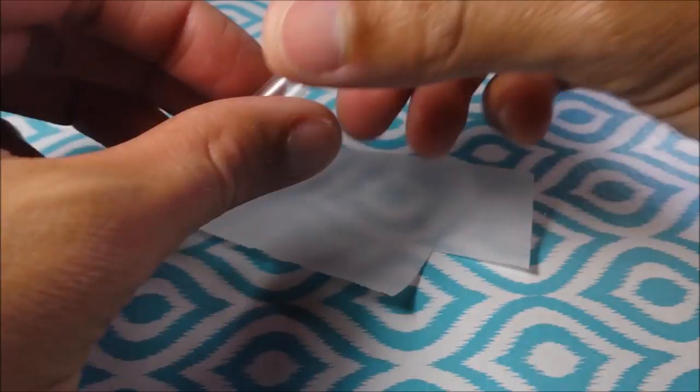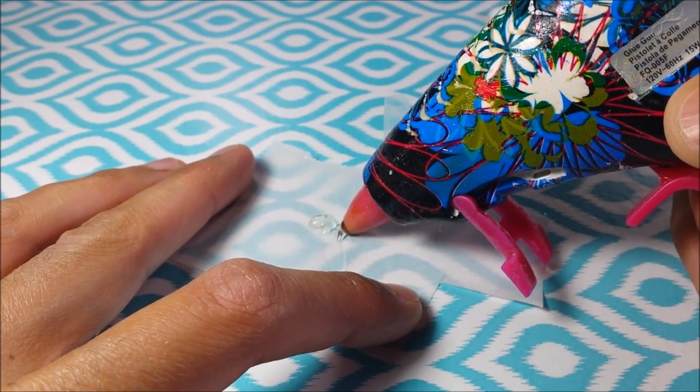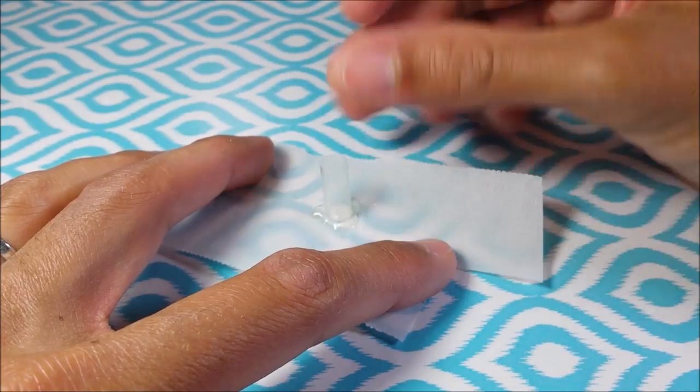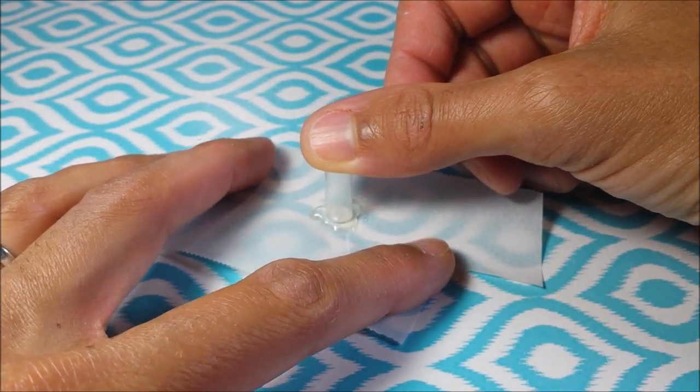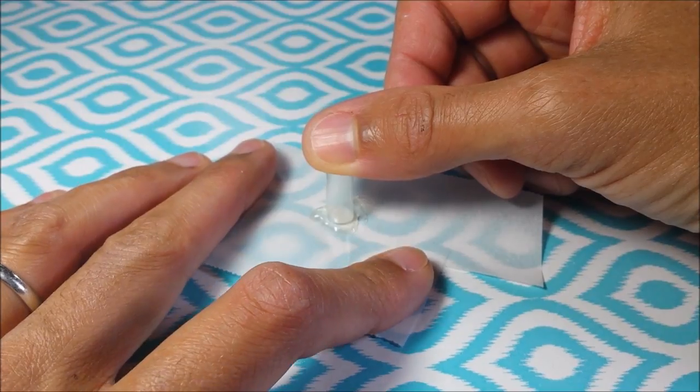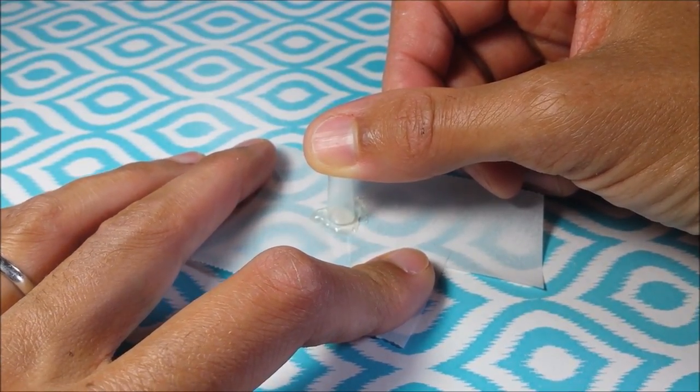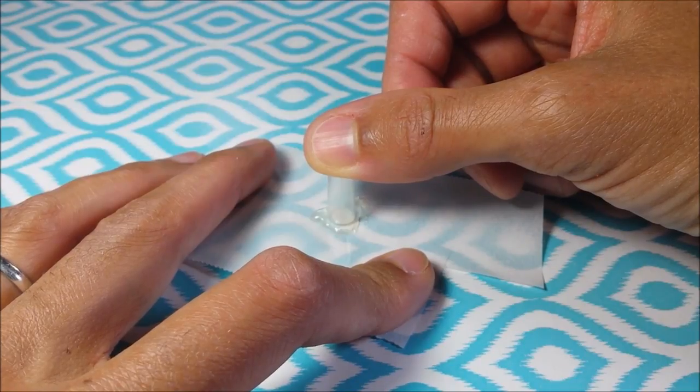Then I take a piece of parchment paper, squirt out some hot glue and place in the middle. And I give it about 20 seconds. Basically I pull it off before it gets super hard, so it's a little bit easier to peel away.